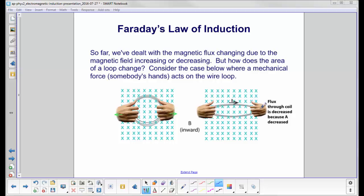What happens here is as you pull the wires apart, the flux through the coil will decrease because the area is decreased.